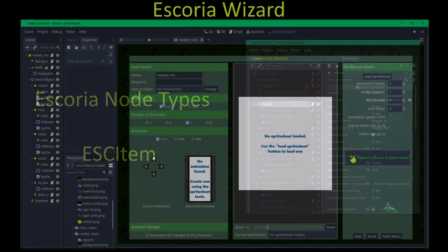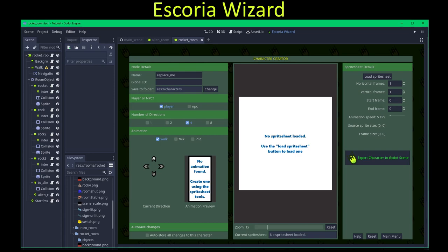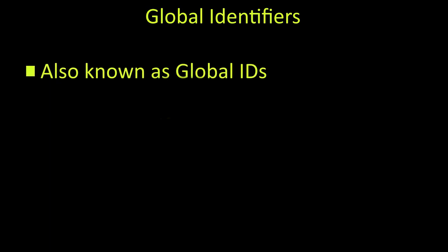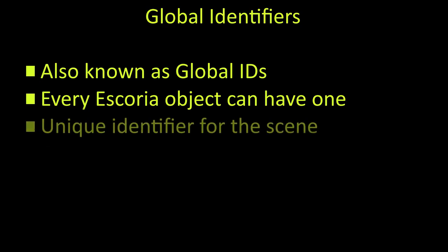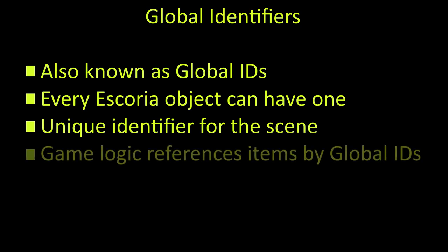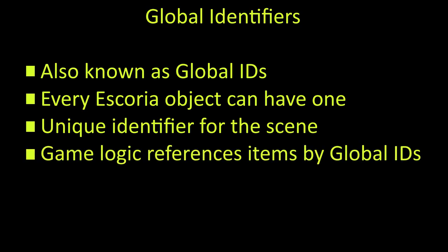While you can create any of these nodes manually, I'll shortly show you how to use the Escoria Wizard, which takes the hard work out of setting up your game by creating and configuring these nodes for you. The last concept I want to cover are global identifiers, also known as global IDs. Pretty much everything — from items to terrains to locations — can be given a global ID that is unique to the scene, allowing the developer to link game logic to the relevant item.